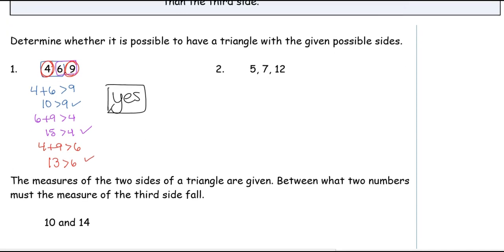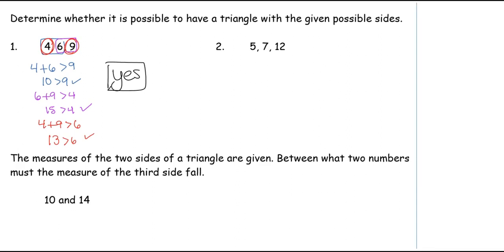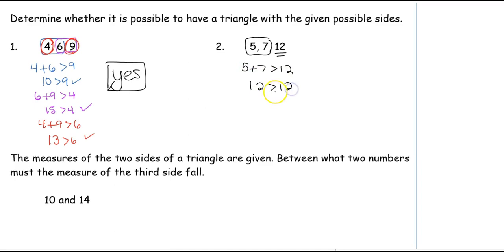That's our only requirement right now in order to have a triangle. Now for 5, 7, and 12 — again, two sides have to be greater than the third side. 5 plus 7 has to be greater than 12, but 5 and 7 is 12. Is 12 greater than 12? No — 12 is equal to 12, but it's not greater than 12. That doesn't fit our requirements, so these three sides are not going to form a triangle.